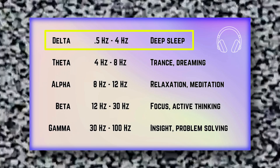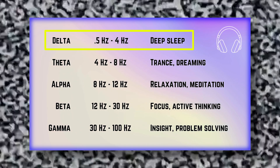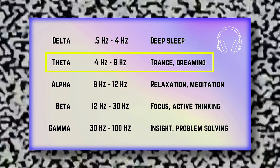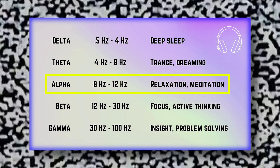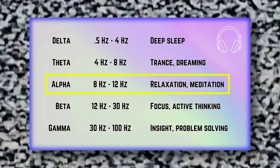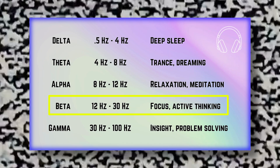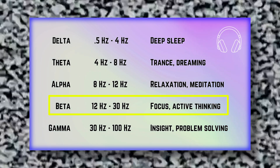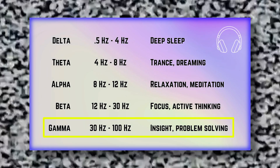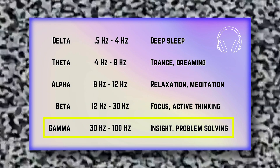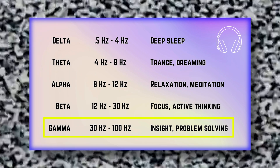Delta waves are the lowest, from 0.5 hertz to 4 hertz, and are associated with deep sleep. Theta waves are from 4 to 8 hertz and are associated with trance and dreaming. Alpha waves are from 8 to 12 hertz and are associated with relaxation and meditation. Beta waves are from 12 to 30 hertz — this is our normal waking state when we are focused or actively thinking. Gamma waves are the highest, from 30 to 100 hertz, and are associated with the highest levels of concentration, insight, and problem solving.